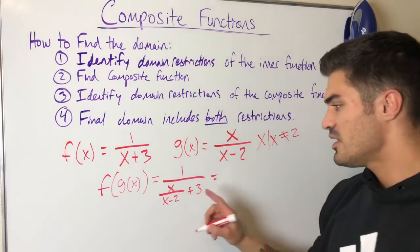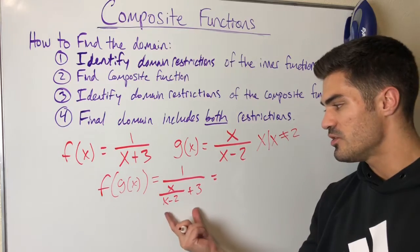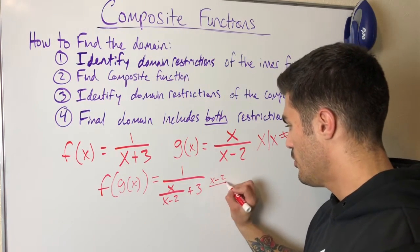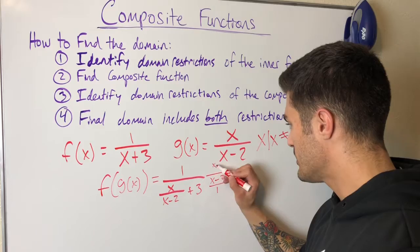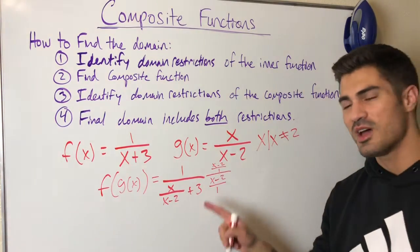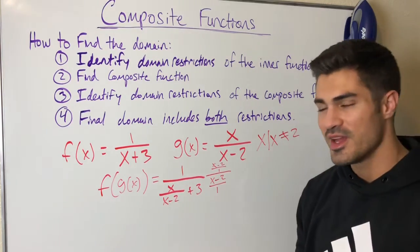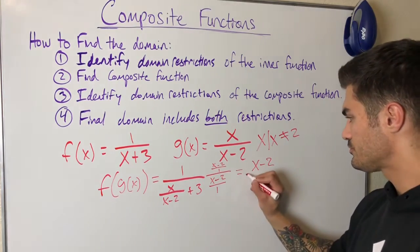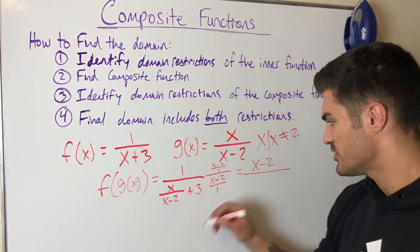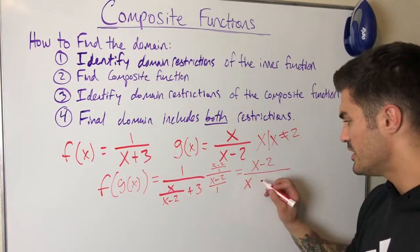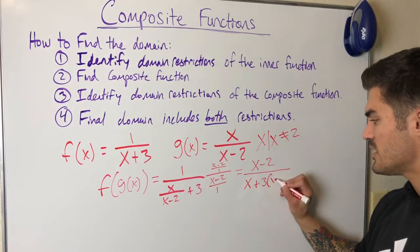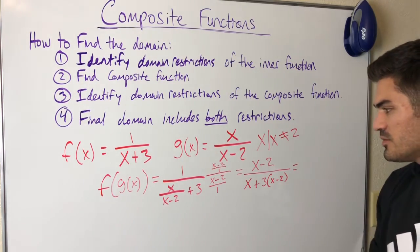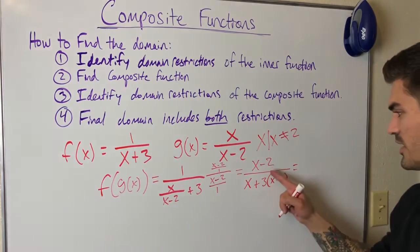Now I find the composite function by plugging g(x) = x/(x−2) into f, giving 1 over (x/(x−2)) + 3. I'll multiply top and bottom by (x−2) over 1 to eliminate the fraction. On top, (x−2) times 1 = x−2. On the bottom, (x−2) cancels with the denominator of x/(x−2), leaving x, plus 3 times (x−2) which is 3x − 6.